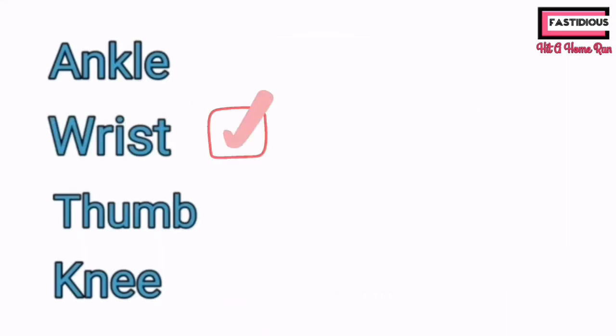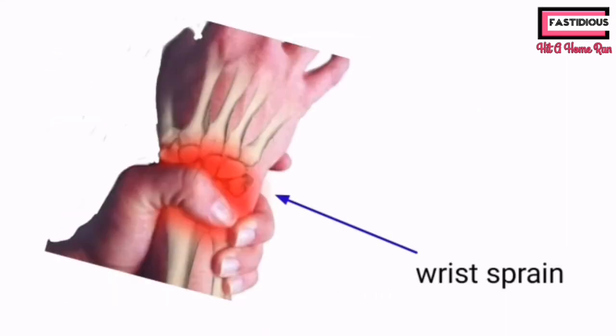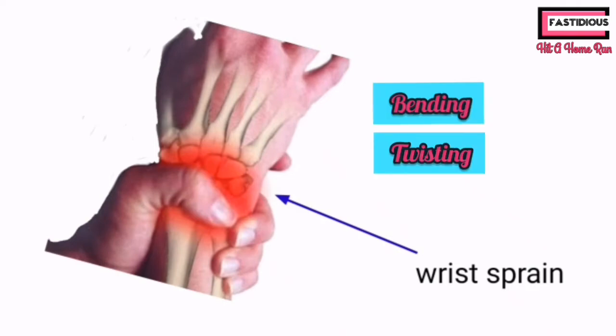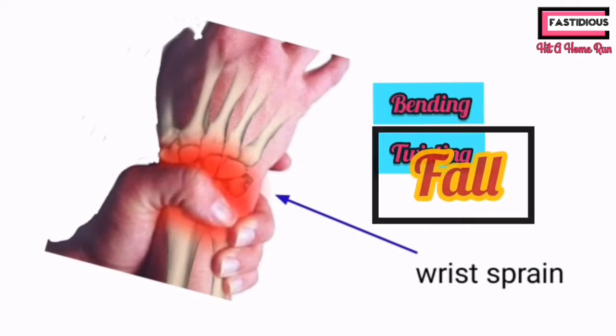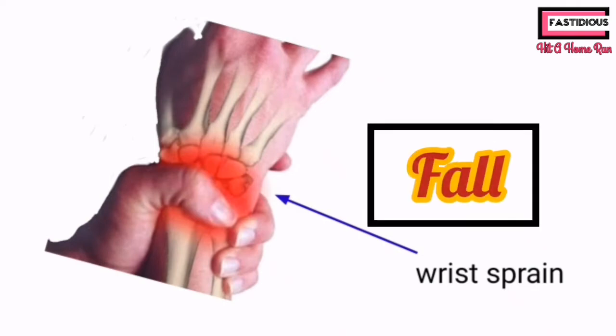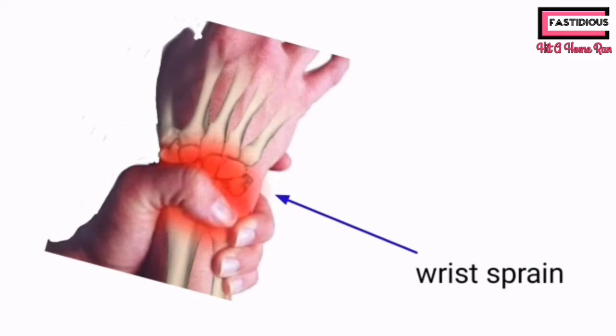The second location is the wrist. Wrist sprain occurs due to bending, twisting, or a fall. During a fall, sprain occurs when a person lands on an outstretched hand, causing the ligament to tear.